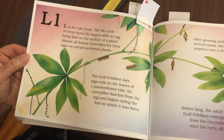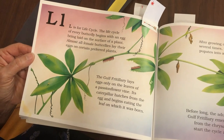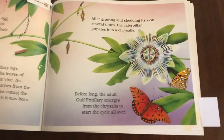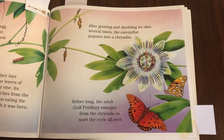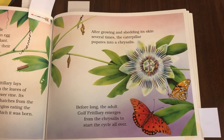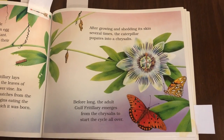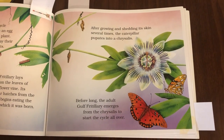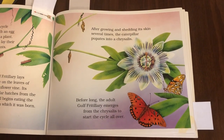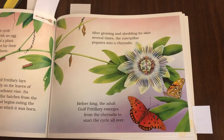Its caterpillar hatches from the egg and begins eating the leaf on which it was born. After growing and shedding its skin several times, the caterpillar pupates into a chrysalis. Before long, the adult gulf fritillary emerges from the chrysalis to start the cycle all over.